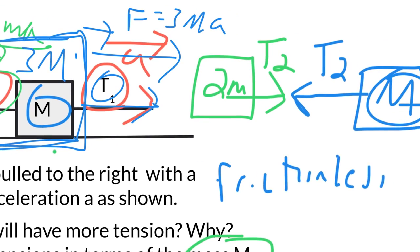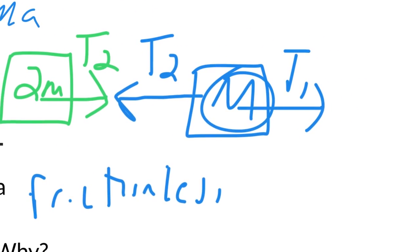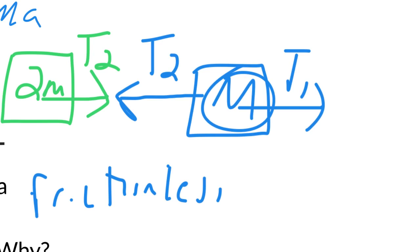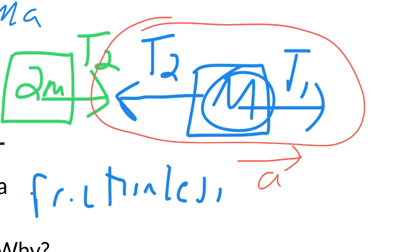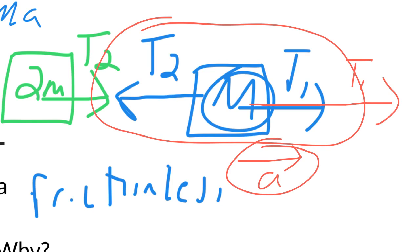Just conceptually, if we want acceleration to the right, then looking at the FBD for mass M, T1 has to be bigger than T2. If T1 were not larger than T2, it would not be accelerating to the right. If they were equal, it would be moving at constant speed or not moving at all. And if T2 were bigger than T1, there would have to be acceleration to the left. So you could answer the conceptual question just by looking at this mass alone.